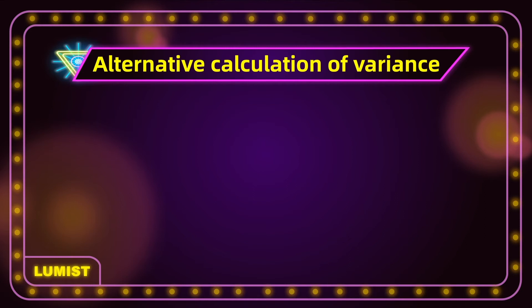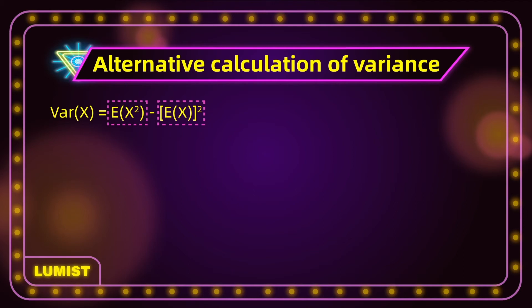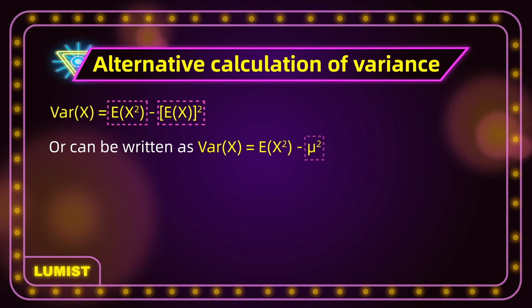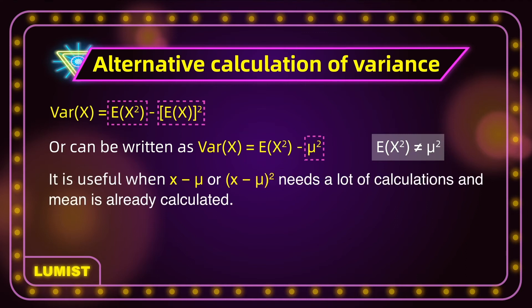Here is an alternate and sometimes more convenient way to calculate the variance of x. The variance of x can be expressed as E[x²] − (E[x])², which can also be written as E[x²] − μ². Note that E[x²] does not equal μ². This formula is useful when (x − μ)² requires a lot of calculation, and often the mean is already known, so you only need to find E[x²].